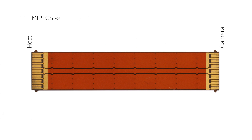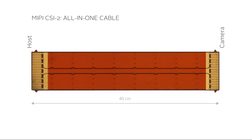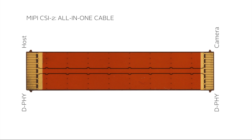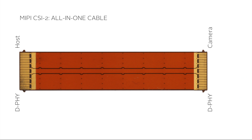MIPI CSI2 relies on flexible flat cables, so the maximum distance between host and camera is about 40 centimeters, which is more than enough in an embedded system. The CSI2 standard focuses on the data transmission protocol, so the connectors are not defined by the standard. As with most embedded vision applications, Allied Vision's CSI2 implementation relies on a FFC connector. The Allied Vision CSI2 interface supports the MIPI CSI2 standard and includes the following channels.